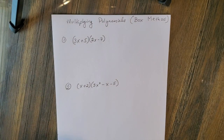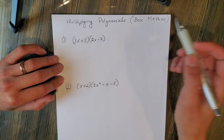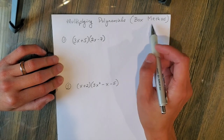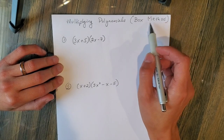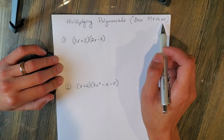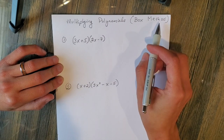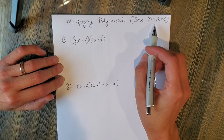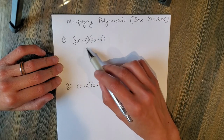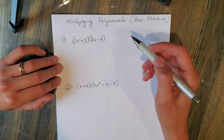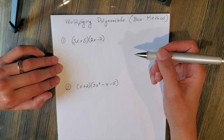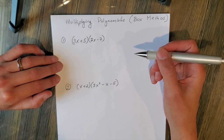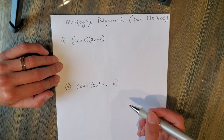Alright ladies and gentlemen, today's lesson is called multiplying polynomials using the box method. The reason we're going to use the box method is because it's the most organized method I know to multiply polynomials. Remember to pause the video if you need to copy down the problems or if I'm going too fast.